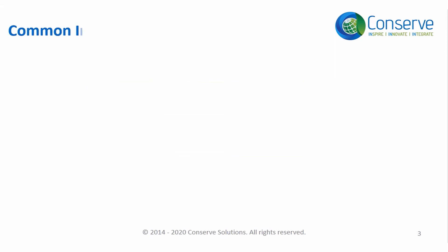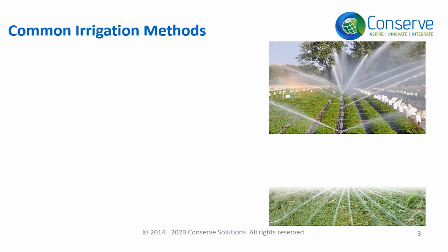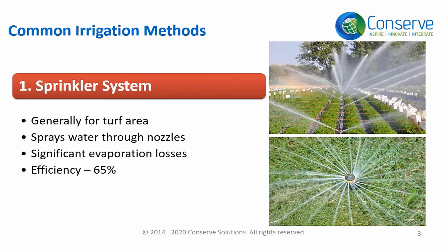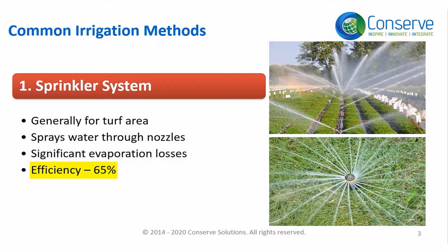Common irrigation methods for landscape are sprinkler systems and drip irrigation. Sprinkler systems are generally used for turf or lawn areas. As the name implies, a sprinkler system sprays water through nozzles, and there will be significant evaporation losses. Sprinkler systems have an efficiency of around 65%.